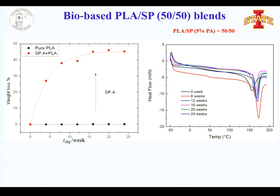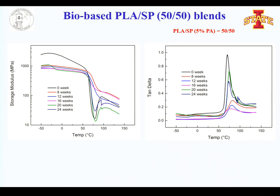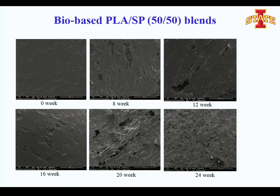DSC measurements show that after just eight weeks the melting point shifts to slightly higher temperature, meaning the crystallization percent of the blend increased by degradation — probably because degradation takes place in the amorphous part and only the crystalline part remains. After longer degradation time the melting point doesn't change much. The elastic modulus decreases significantly by degradation and the glass relaxation temperature, related to Tg, shifts to higher temperature but only slightly.